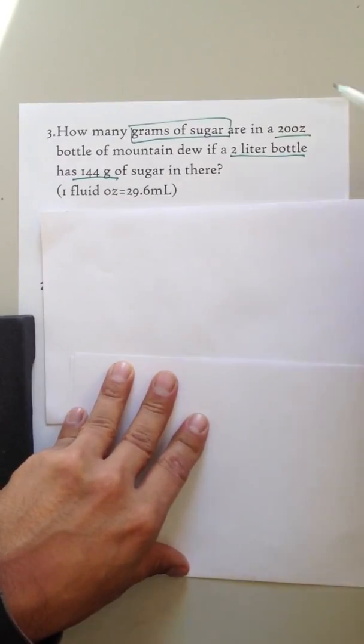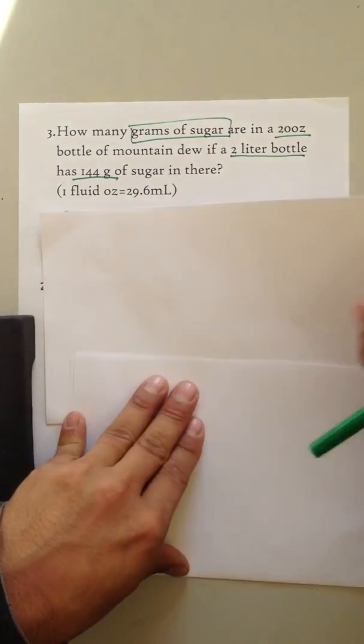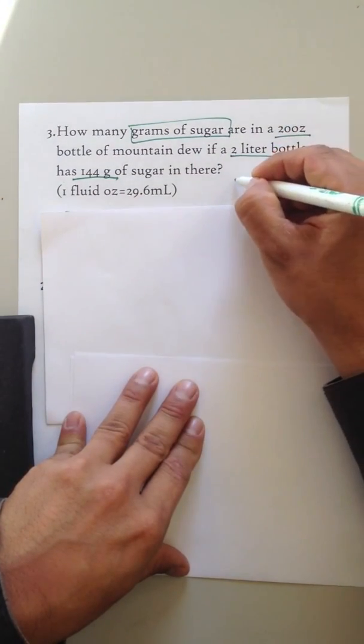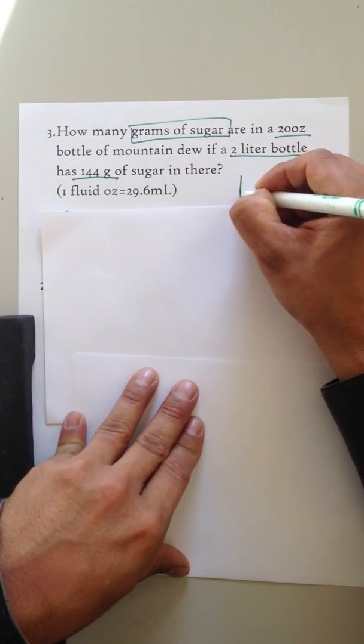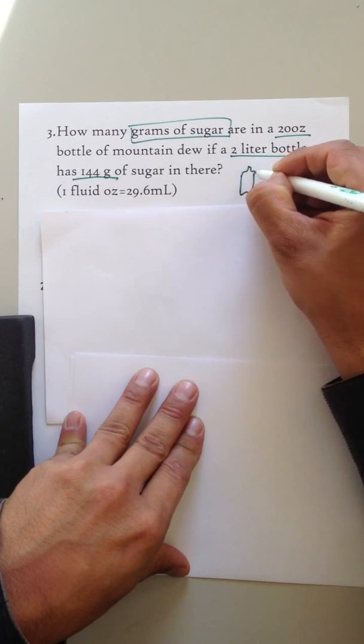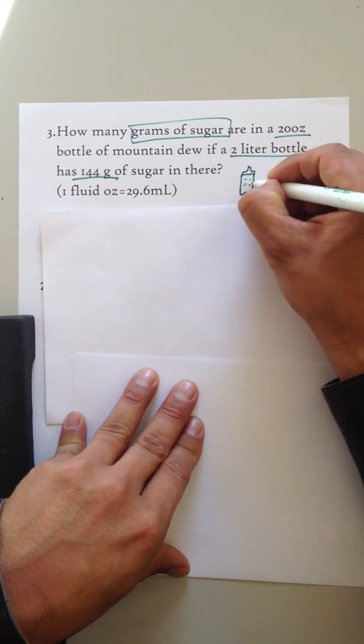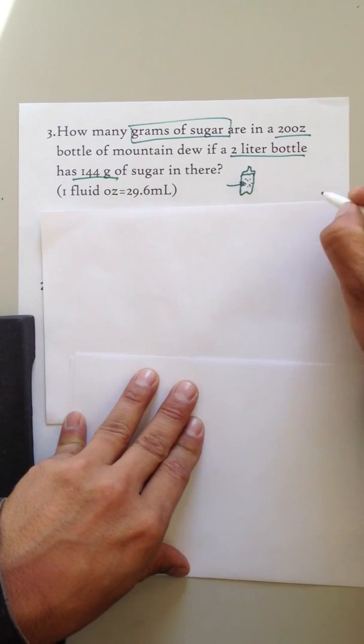So let's think about what they're asking us. They're trying to figure out how many grams of sugar are in a 20-ounce bottle of Mountain Dew. So let's think. Here's the little bottle. Alright, and we're trying to figure out how many grams of sugar are in there. 20 ounces.